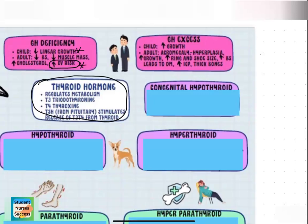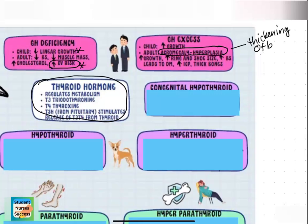In adults who develop growth hormone excess, it's usually in response to some type of pituitary tumor causing too much growth hormone to be produced. Because their growth plates are already closed, we start seeing a thickening of their bones called acromegaly. You start to see their mandible grow larger, their frontal forehead grow coarser and thicker, and an increase in ring and shoe size. Their fingers will get bigger, their feet will get larger — it's more of a bulkiness of the bones and not a linear growth.